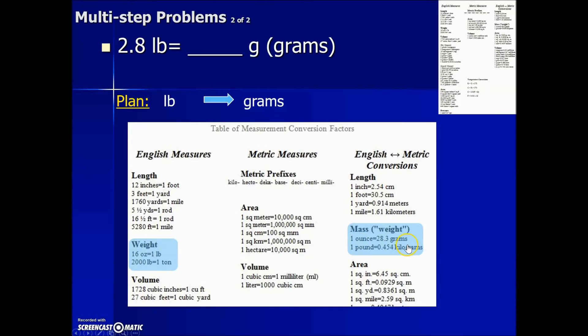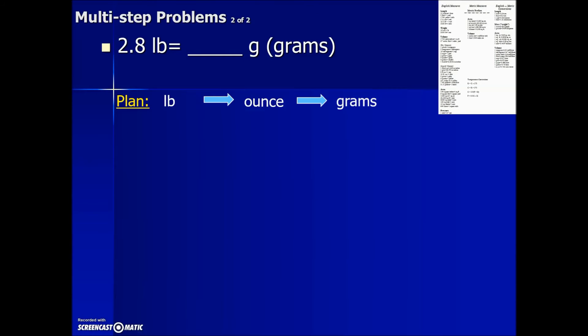The common relationship that crosses between English to metric is that ounce. So to go from pounds to grams we're temporarily going to have to convert pounds to ounces and then continue on with the conversion into grams.